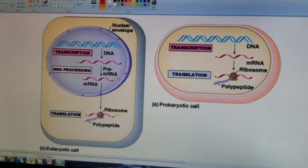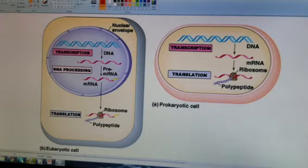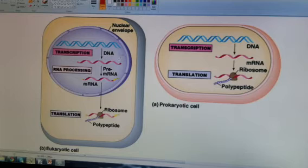Here we compare protein synthesis in both eukaryotes and prokaryotes. In eukaryotes we have our nucleus where our DNA is located. Our DNA is transcribed into RNA right here in the process of transcription.